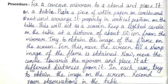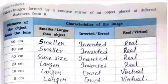Try to obtain the image of the flame on the screen. For this, move the screen until a sharp image of the flame is obtained. Now move the candle towards the mirror and place it at different distances from it. In each case, try to obtain the image on the screen and record your observations in the table.